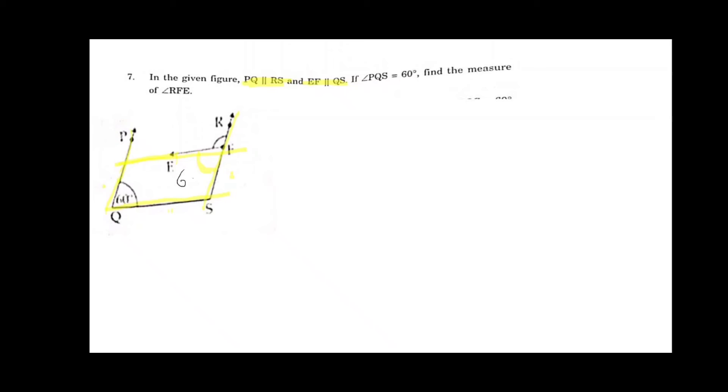So angle PQS is equal to angle EFS. That is 60. And by linear pair condition, angle RPE gives 180 minus 60 degrees, which is 120.